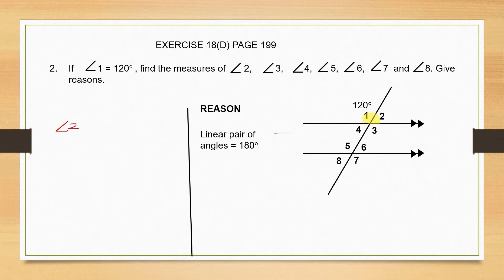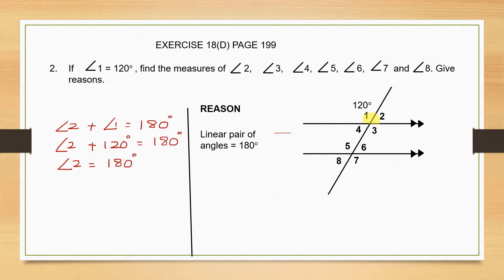That means angle 2 plus angle 1 should give us 180 degrees. So let's find out angle 2. Angle 1 is given to us — it's 120 degrees. Together they're equal to 180 degrees. To find angle 2, we leave it on the left-hand side. On the right, we leave 180 degrees and move the 120 degrees from the left-hand side to the right, so plus 120 becomes minus 120 degrees. So angle 2 equals 180 minus 120, which is 60 degrees.